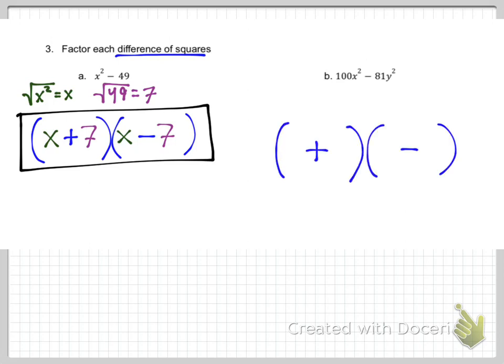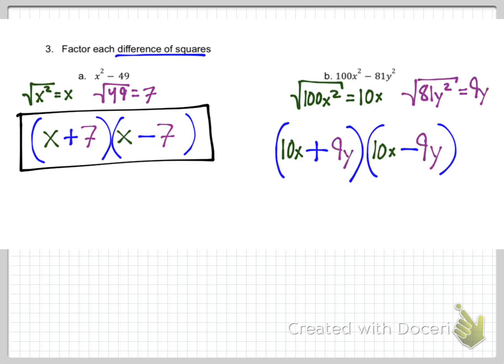Here we'll do the same process, plus and minus in the parentheses. We're going to do the square root of the first term. That's 10x. And the square root of the second term is 9y. And so you notice that is our answer.